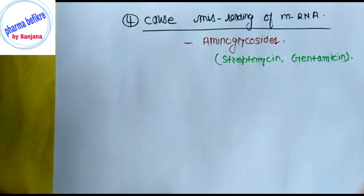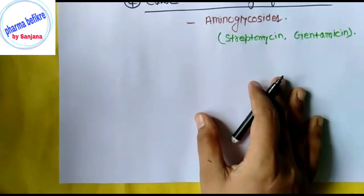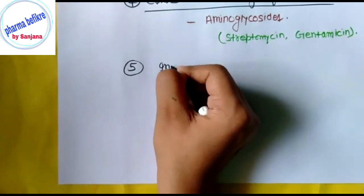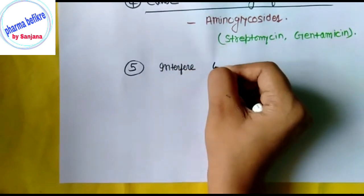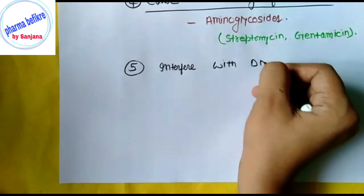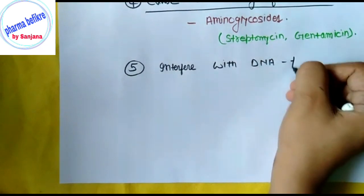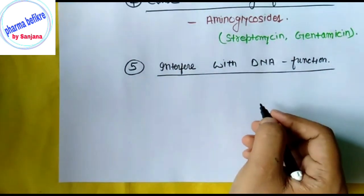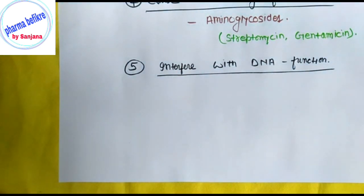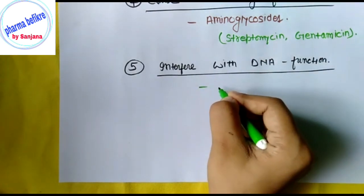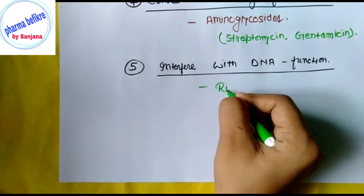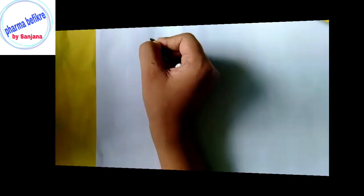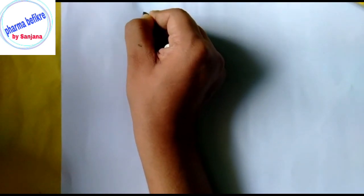The fifth group consists of drugs that interfere with DNA function. In this group, only one drug comes — that is Rifampin.